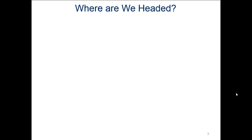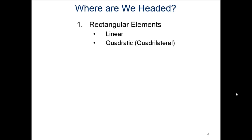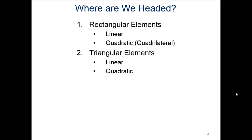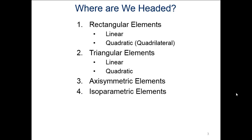So where are we headed? In this presentation, we're going to look at rectangular elements first — both linear and quadratic rectangular elements — then triangular elements, both linear and quadratic. We'll also look at axisymmetric elements and their value, isoparametric elements, and finally how these show up in ANSYS elements. The index of timestamps is in the description below so you can skip ahead as needed.